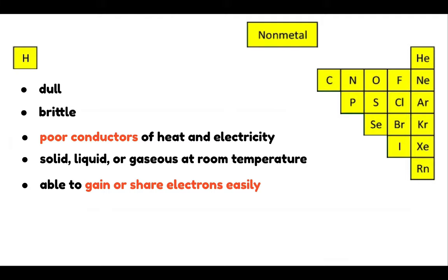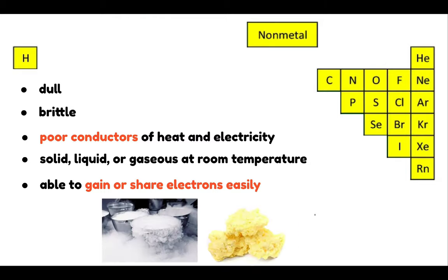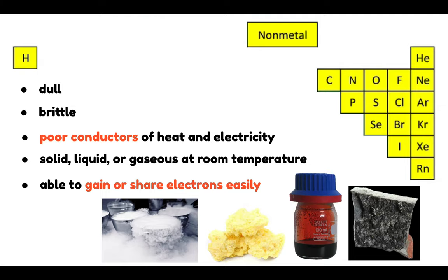Non-metals are mostly on the right side of the periodic table, except for hydrogen. Non-metals have properties that are opposite from those of metals — they are dull, brittle, and poor conductors of heat and electricity. They can be solid, liquid, or gaseous at room temperature, and they have the ability to gain or share electrons easily. Some examples are nitrogen, sulfur, bromine, and selenium.